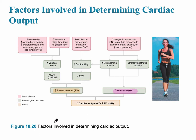Let's talk about ways in which stroke volume can be changed. To calculate stroke volume, we consider two important numbers: the end-diastolic volume (EDV), which is the preload, and the end-systolic volume (ESV), which is the amount of blood remaining after the ventricle has ejected the stroke volume. Stroke volume equals EDV minus ESV.